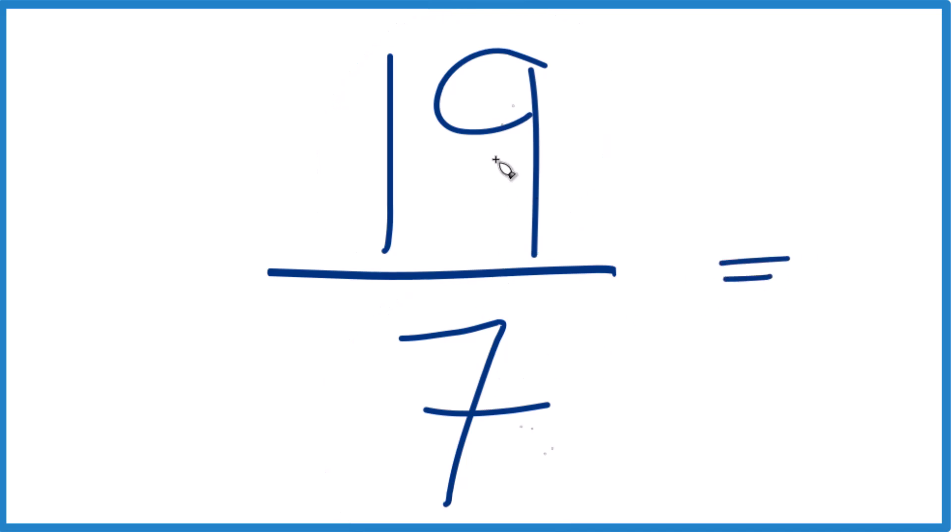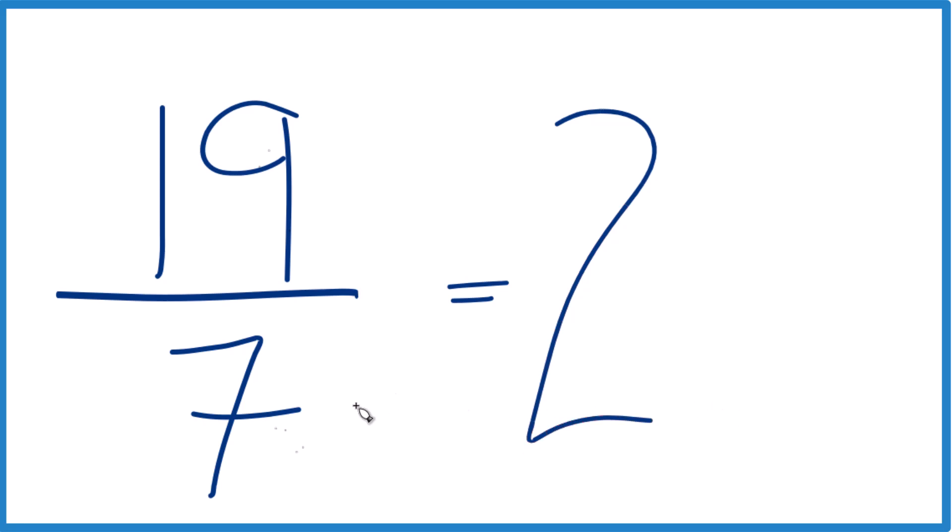7 goes into 19, 2 times 7 is 14 and we'd have 5 left over. Bring that denominator across.